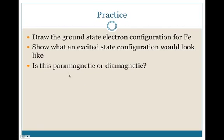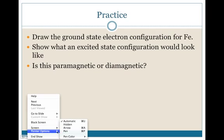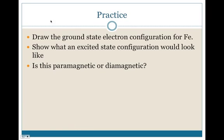Alright, so here we go finishing up the notes, picking up where we left off. Draw the ground state electron configuration for iron. Let me get a pen here. Iron is in the fourth row, which makes it 3d6.